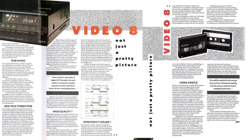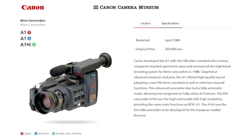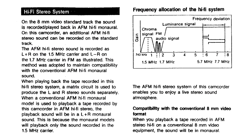Later, machines that used 8mm hardware were introduced for sound recording only, allowing up to six digital audio tracks. In 1989, Canon introduced AFM stereo with its Canon Vision A1 Hi8 camcorder. The extra luminance bandwidth of the Hi8 system allowed expanding audio bandwidth without hurting the picture.